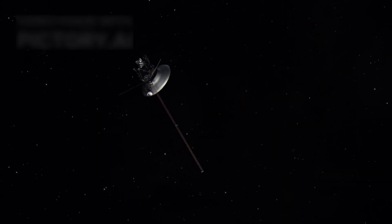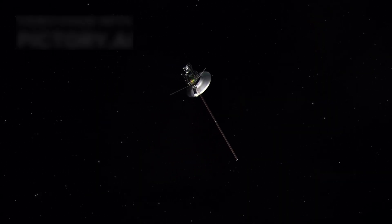Voyager 1 runs on a radioisotope thermoelectric generator powered by plutonium, which is slowly fading. Around 2025, it will fall silent, one instrument at a time. Yet even when it stops transmitting, it will continue drifting, forever into the cosmic darkness.